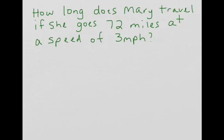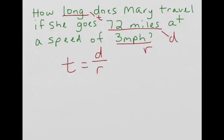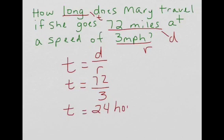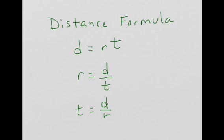The last problem, how long does Mary travel? How long would refer to time. So we're going to do T equals D divided by R. If she goes 72 miles that's her distance, and miles per hour again is our rate. So we're going to be T equals 72 divided by 3. T equals 24 hours. Now you know how to use the distance formula.